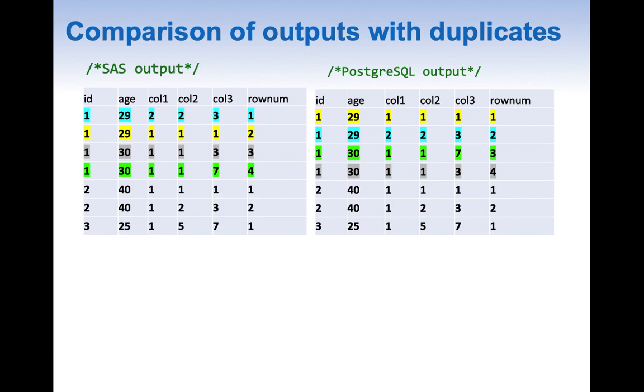In the SAS output and postgres output comparison we can see that row numbers are assigned in such a fashion that they give the lowest number to age 29 when compared to 30, but the results are not exactly same. To understand this better I have color coded the values, especially column 1, 2 and 3 along with age. In the first scenario where the row number is 1 in SAS, for exactly similar data the row number is 2 in Postgres. When ID is 1, age is 29, column 1, 2, 3 has value of 1, the row number in case of SAS is 2 whereas in postgres is 1.